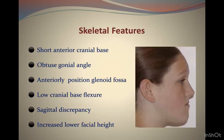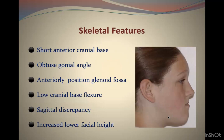Class 3 patients — whether adult or young — present with characteristic signs: a short anterior cranial base, an obtuse gonial angle, and an anteriorly positioned glenoid fossa. In Class 2, the glenoid fossa is posteriorly positioned, keeping the mandible back. In Class 3, the glenoid fossa is usually anteriorly positioned, which is one reason they present as Class 3.